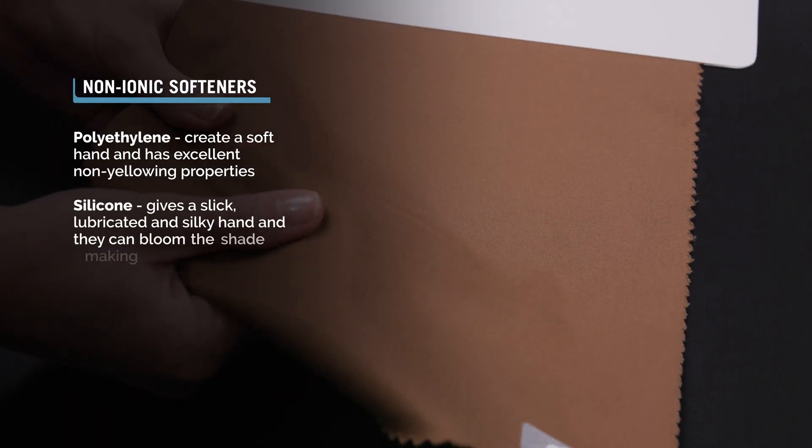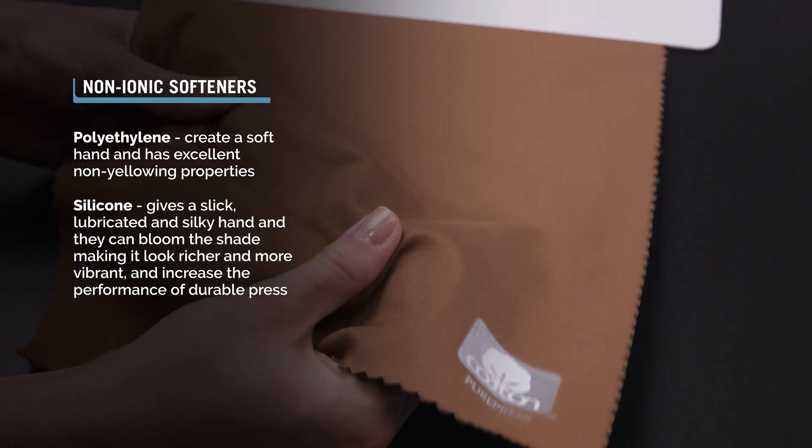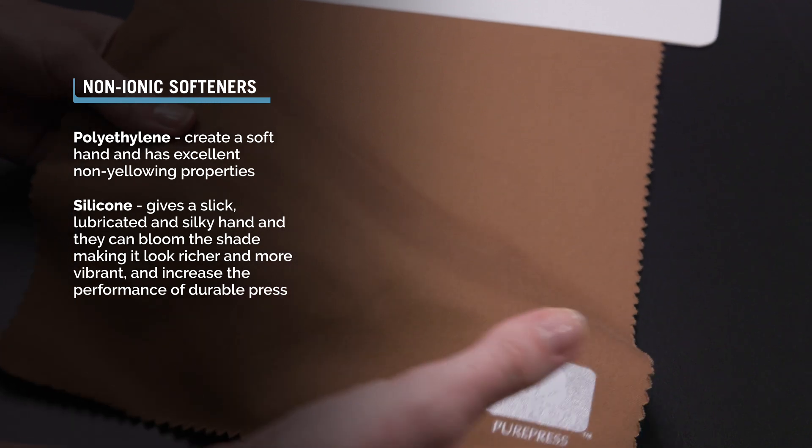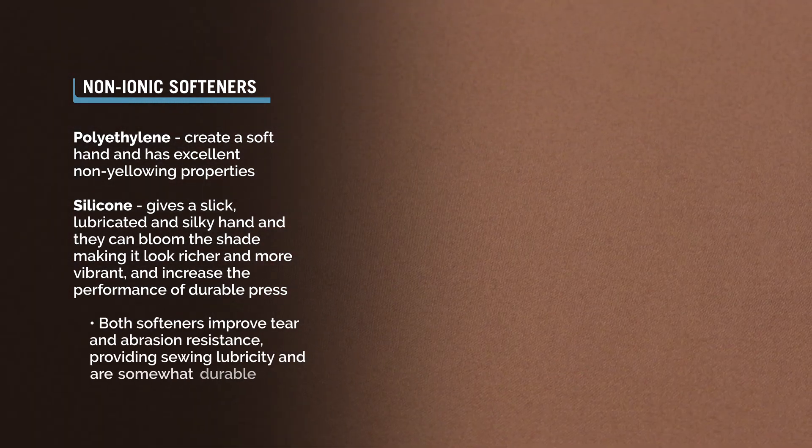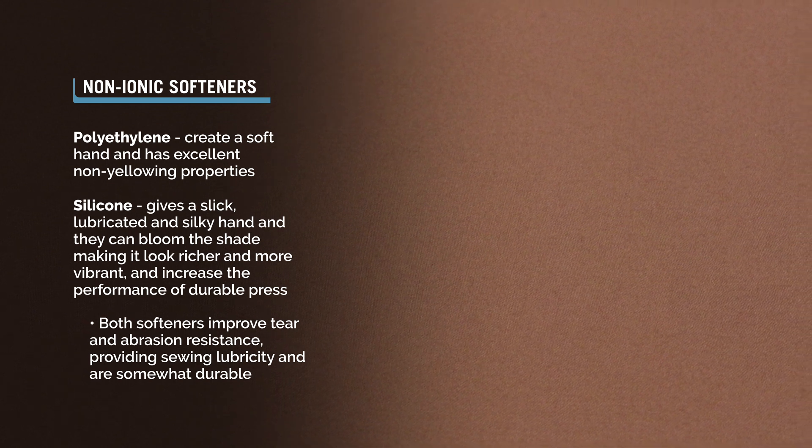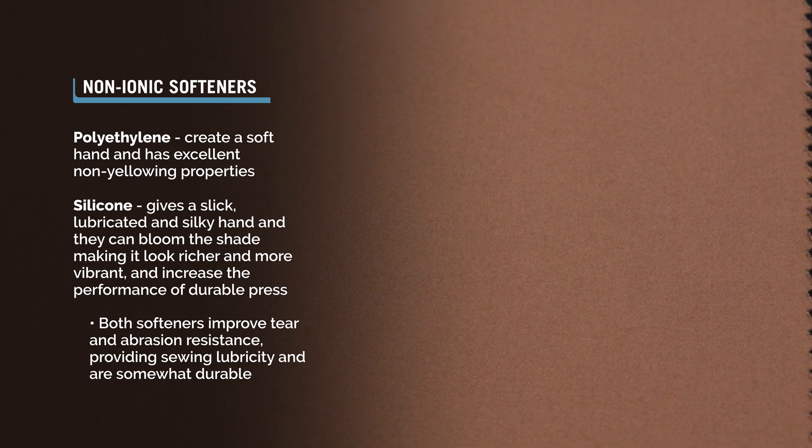The silicones give a slick, lubricated, and silky hand, and they can bloom the shade, making it look richer and more vibrant. They also increase the performance of durable press. Both polyethylene and silicone softeners improve tear and abrasion resistance, providing sewing lubricity and are somewhat durable.